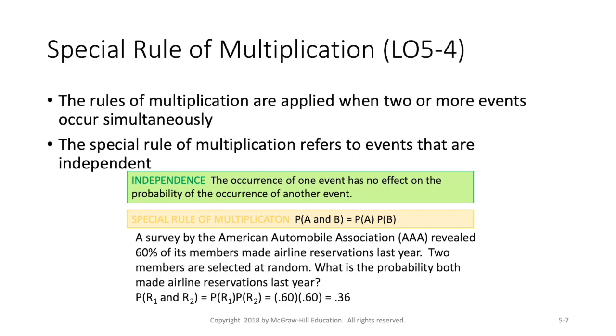And so here the AAA looks at its members, and 60% of you made airline reservations last year. If we select two members at random, what's the probability that they both made an airline reservation? Well, these members don't know each other. They don't travel together. So John booking an airline reservation has no impact or effect at all on Sally booking an airline reservation.